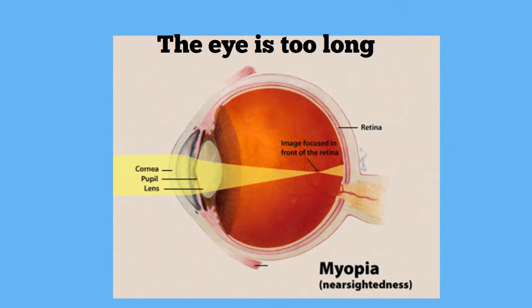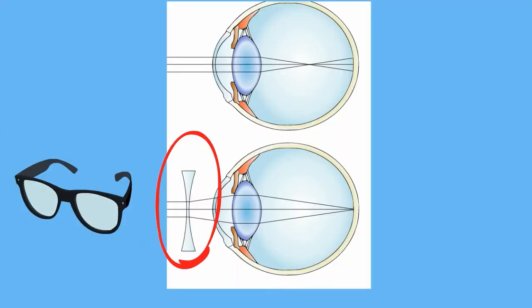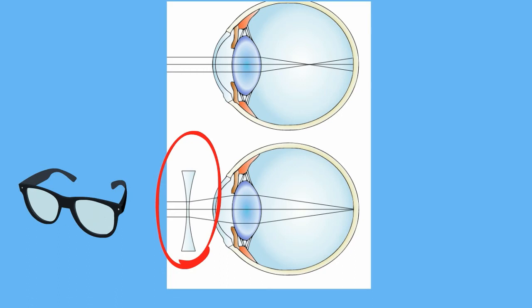To correct nearsightedness, a person will wear glasses with concave lenses. A concave lens is thicker at the edges than in the center. When light rays pass through a concave lens, it makes the light rays spread out before they reach the lens of the eye. This way, when the light rays pass through the lens of the eye, they focus on the retina rather than in front of it.